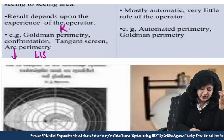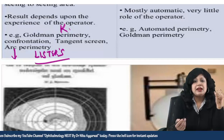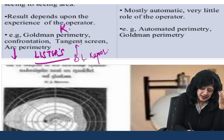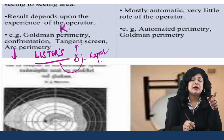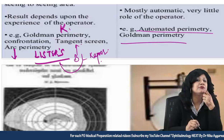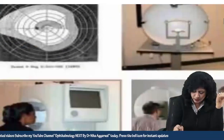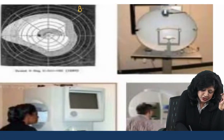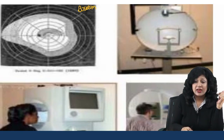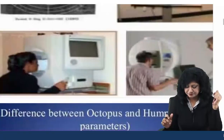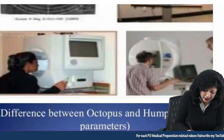In kinetic perimetry, the stimulus is moving — coming from a non-seeing area to a seeing area. In static perimetry, there is an increase in luminance from less luminance to more luminance. Examples in kinetic perimetry include Goldmann perimetry, Jerem's perimetry (the tangent screen), and the Lister's arc perimeter. You can remember these with the mnemonic B.L.K.: B for Jerem's tangent screen, L for Lister's, and K for kinetic.